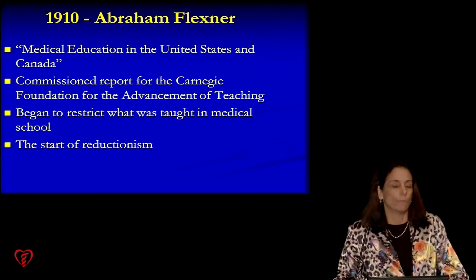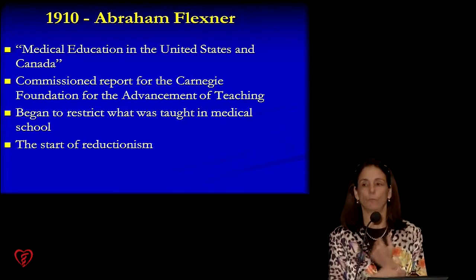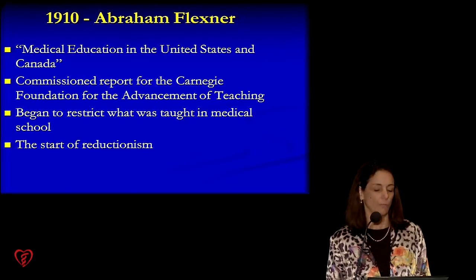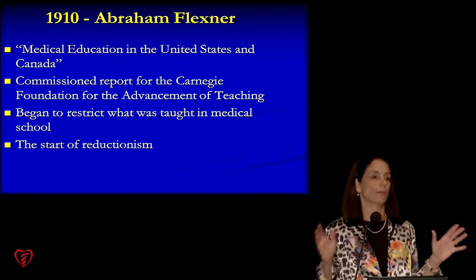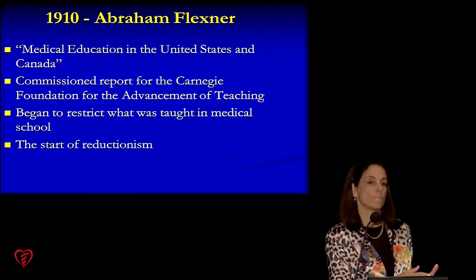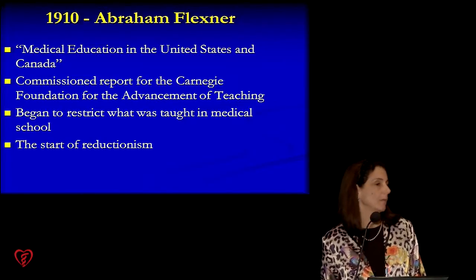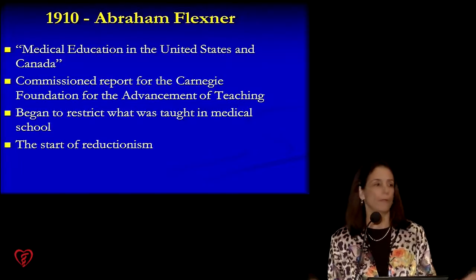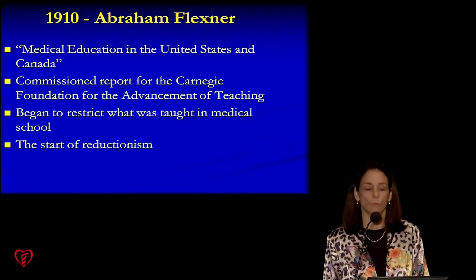It all began in 1910 when Abraham Flexner was commissioned to write a paper about what should go into medical schools, how we should accredit them, and what to do with medical education in the United States and Canada. This report was commissioned for the Carnegie Foundation for the Advancement of Teaching. For the first time in 1910, we had a reductionist approach to health — what made it into that paper and what didn't were totally separated, until things started coming back through holistic integrative medicine. Things like homeopathy were really battered, and chiropractic survived by hanging on by their nails.